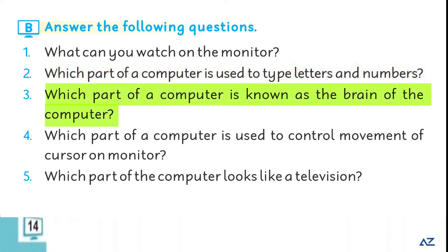Question number 3 is which part of a computer is known as the brain of computer? The answer is that system unit is known as the brain of computer. Question number 4 is which part of computer is used to control movement of cursor on monitor?